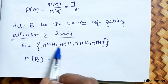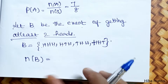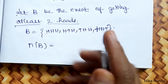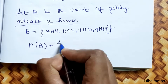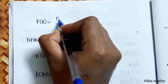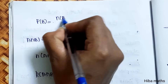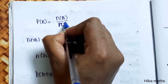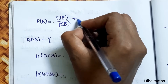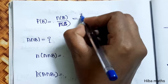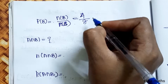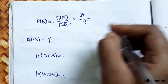Counting favorable outcomes for B: at least 2 heads — outcomes with 2 or 3 heads — gives us 1, 2, 3, 4. So N(B) is 4. Therefore P(B) = N(B) / N(S) = 4 by 8.